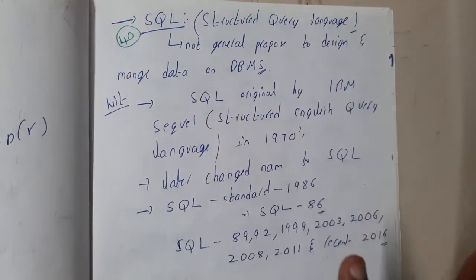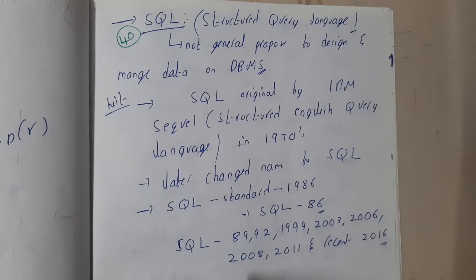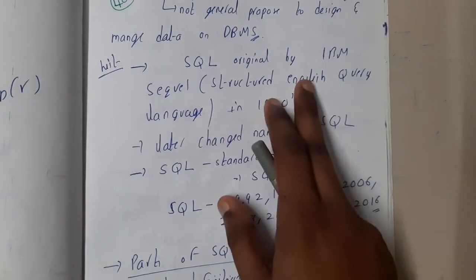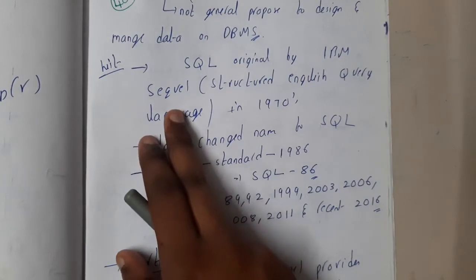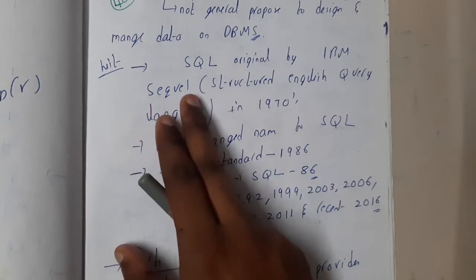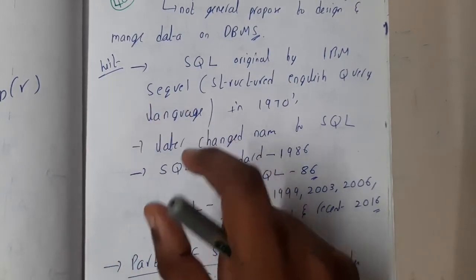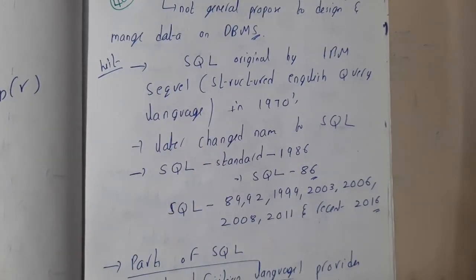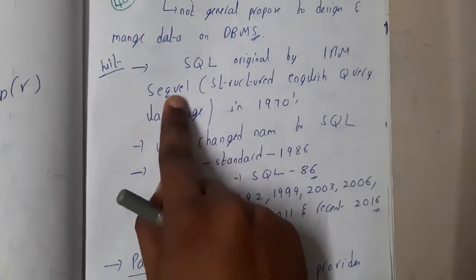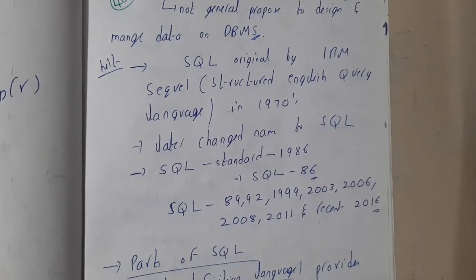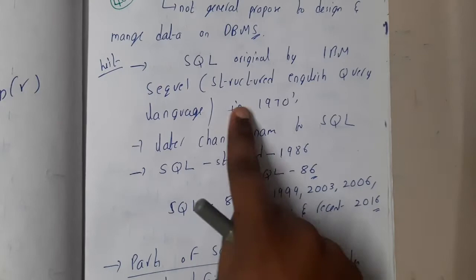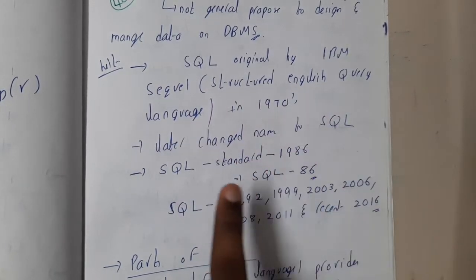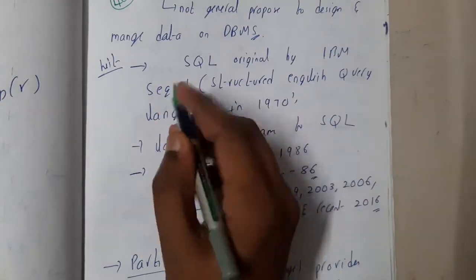A small history about SQL: it was originally developed by IBM and was initially called SEQUEL — Structured English Query Language — in the 1970s. That is why even some faculty members today still say 'sequel' rather than 'SQL'. Later, the name was updated to SQL.